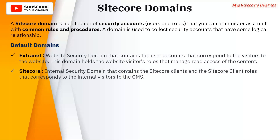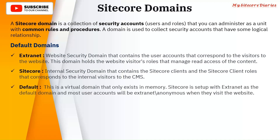Extranet domain is the default domain in Sitecore for visitors. But ideally you should create separate domains as per your website — so if you have one instance with three different websites on that instance, you should create three application domains. The third default domain is the default domain, which is a virtual domain that only exists in memory; it doesn't exist physically. Sitecore is set up with Extranet as the default domain, and most user accounts will be Extranet/anonymous when they visit the website. So the three default domains are: Extranet, Sitecore, and Default.